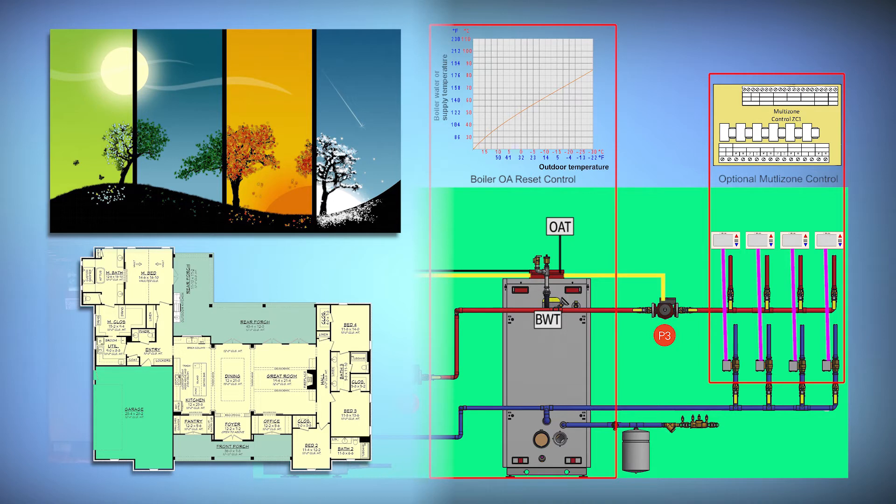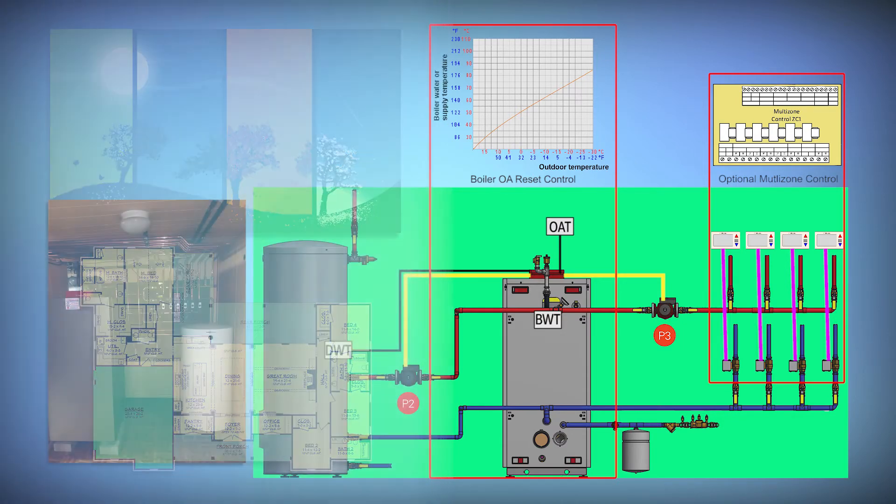This means it is not always necessary to hook up the thermostats or the multi-zone control to the boiler to turn it on and off. The boiler using its outdoor reset control will maintain the right boiler water temperature for the load in the system. When a zone calls the water will be available at the correct temperature immediately. This reduces swing in room temperature making a more comfortable environment.